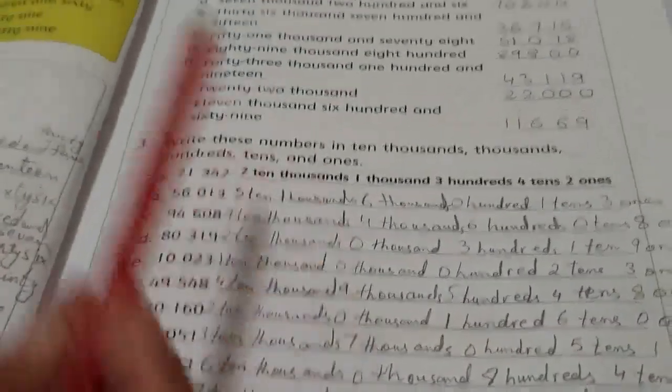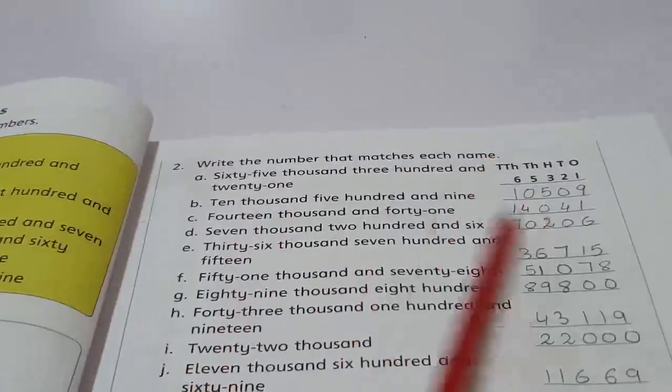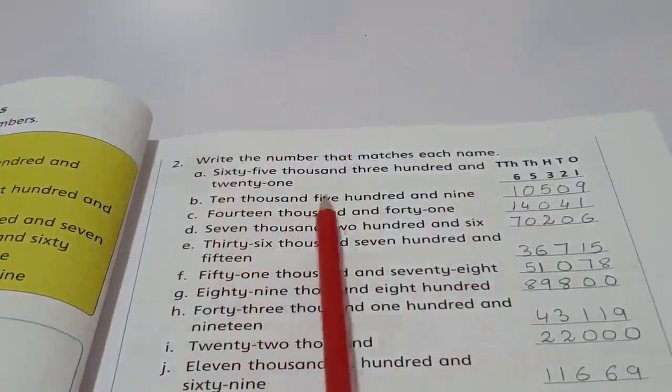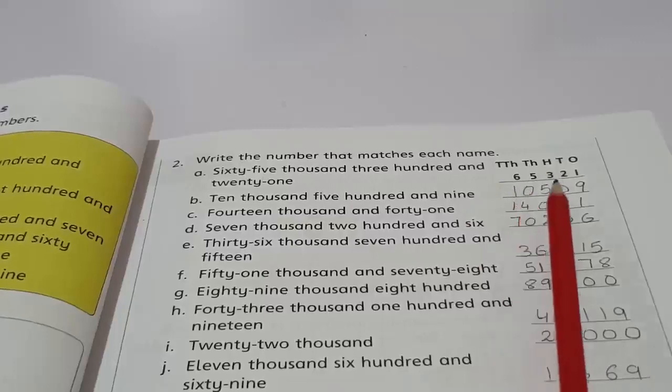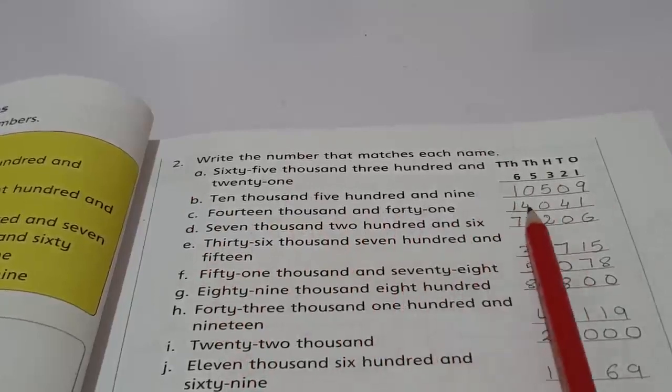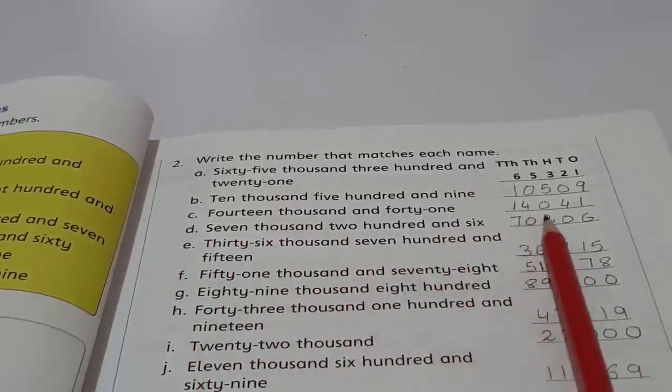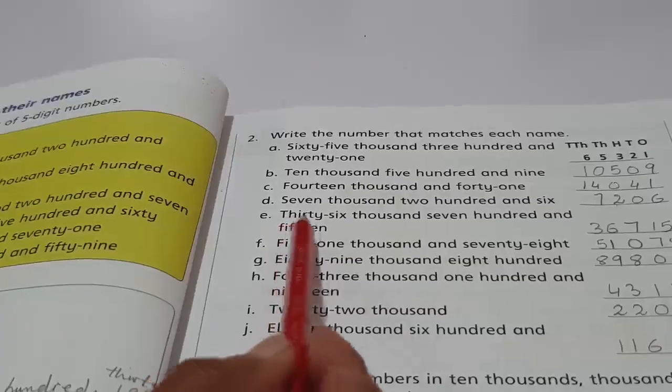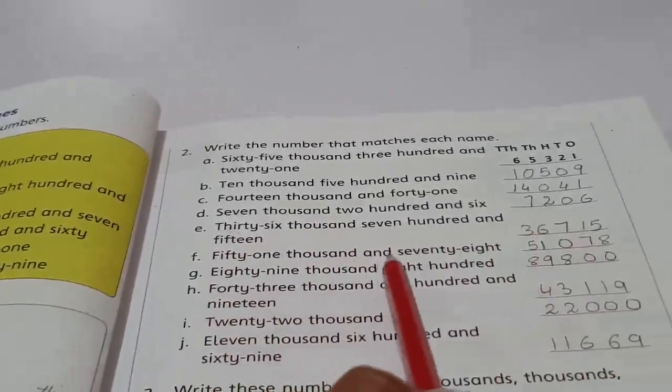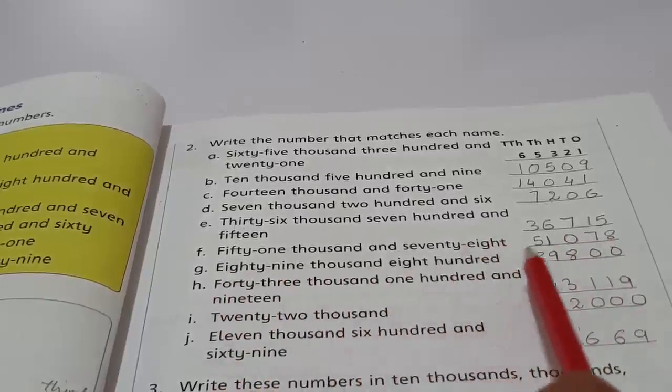Now come to the next page, page number 11. Listen and write the number that matches each name. We have to write the numbers according to their names. First has been done, so we will come to part B. Ten thousand, five hundred and nine - we will write it like 10509. Fourteen thousand and forty-one - 14041. Seven thousand, two hundred and six - 7206. Thirty-six thousand, seven hundred and fifteen - 36715. Fifty-one thousand and seventy-eight - 51078.